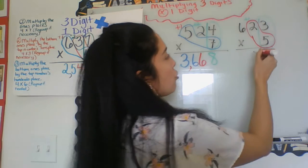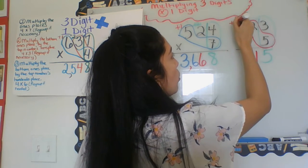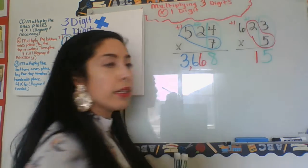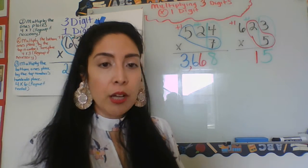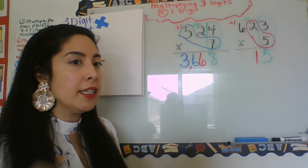So we're going to do five times two is 10, plus one more that I regrouped. That's 11. Drop the one, regroup one more.